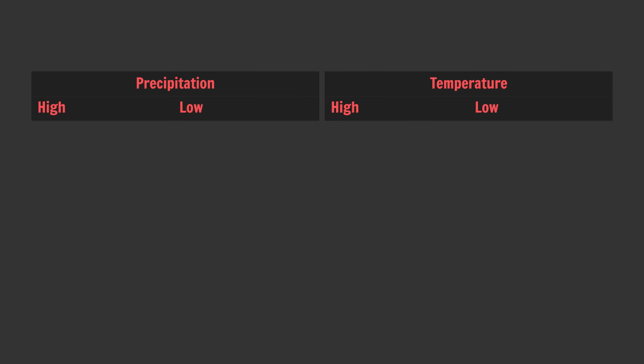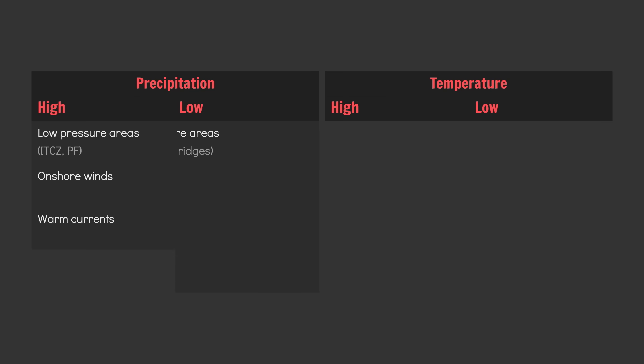Next we need to figure out our relative precipitation and temperature variations, as the climate zones are based in part on these two factors. We can expect relatively high precipitation to occur under low pressure areas — namely the intertropical convergence zone and the polar front — anywhere where the prevailing winds blow moist air onshore, and in regions subject to warm coastal currents. Conversely, relatively low precipitation occurs in high pressure areas, the subtropical ridges, where prevailing winds blow either offshore or parallel to land masses, in areas subject to cold coastal currents, and in the interior of continents.